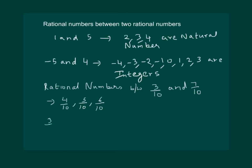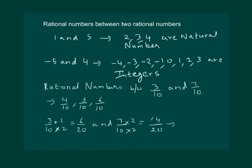That means 3 by 10 is the same as 6 by 20, and 7 by 10 is equivalent to 14 by 20. Now the rational numbers that lie between 6 by 20 and 14 by 20 will be 7 by 20, 8 by 20, and so on till 13 by 20 — all of which also lie between 3 by 10 and 7 by 10.